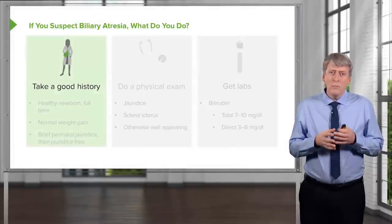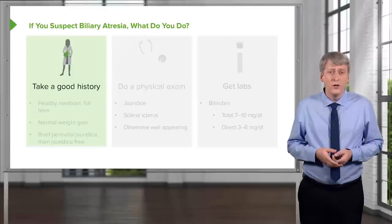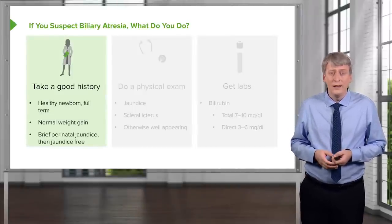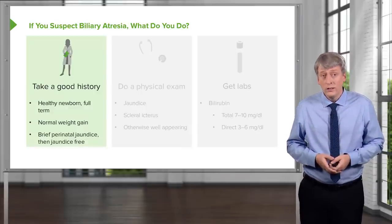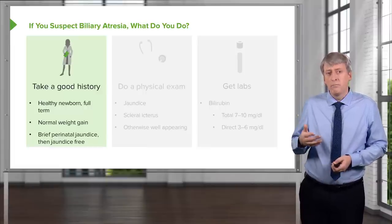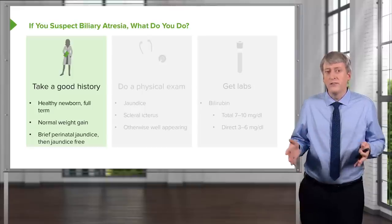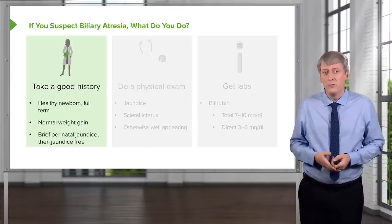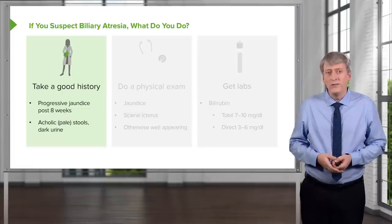If you suspect biliary atresia, it's important to take a good history. Typically, these are healthy newborns — full term, with normal weight gain. They don't have a history of maternal infection in utero, because this is an acute thing that happened after birth. They'll have a brief perinatal jaundice and then be jaundice-free, because that was an unconjugated hyperbilirubinemia. Then they develop jaundice later — generally a progressive jaundice that happens around eight weeks out.